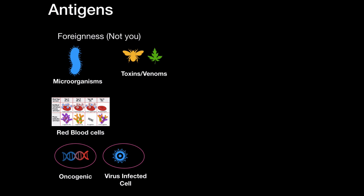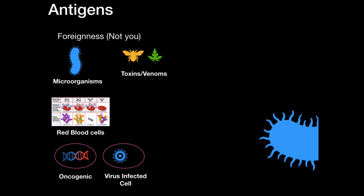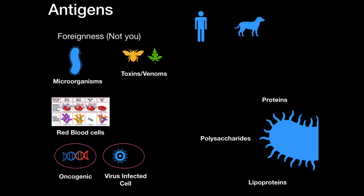Even chemicals or complex structures can be an antigen — for example proteins on the surface of a bacteria. Proteins are actually the most immunogenic, meaning they easily induce an antibody production. Polysaccharides can be an antigen, and also lipoproteins for example. What we find as dangerous might not be dangerous for animals. The reason is our genetic buildup — genes have a lot to do with what we perceive as antigens.